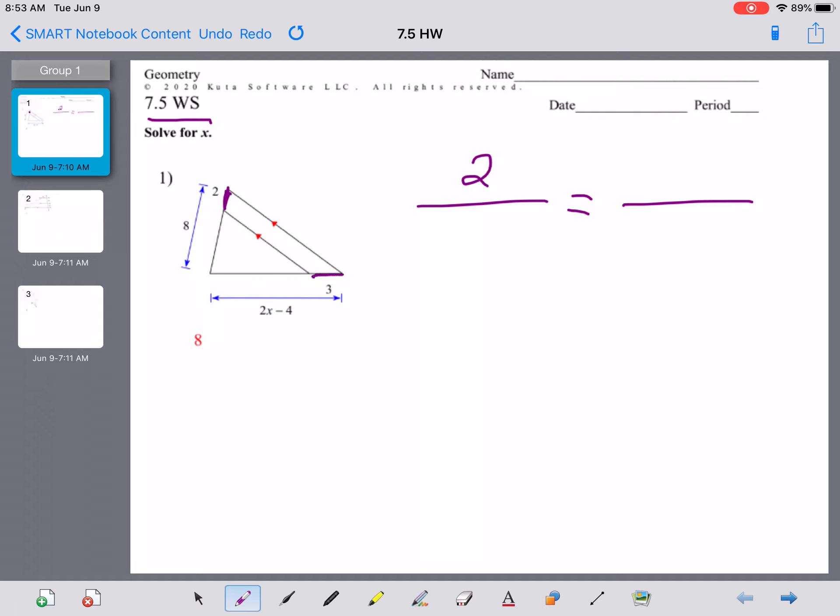Well that two right there lines up with this piece down on the bottom which has a length of three. The other thing they gave you was eight, and unlike the problem I did with you in the notes, the eight represents the length of the entire left hand side. So this entire left hand side is eight. That would have to match up with the entire bottom side here, which luckily they gave us as 2x minus 4.